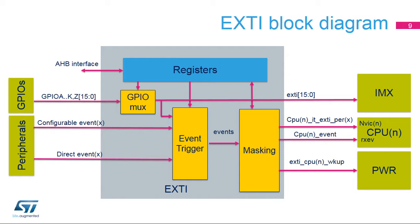The register block contains all eXTI registers. The event input trigger block provides event input edge triggering logic. The masking block provides the event input distribution to the different wake-up, interrupt, and event outputs, and their masking. The GPIO multiplexing block allows selection of a GPIO pin to be used as a configurable interrupt trigger event and/or as a signal to the peripheral's interconnect matrix, or IMX.